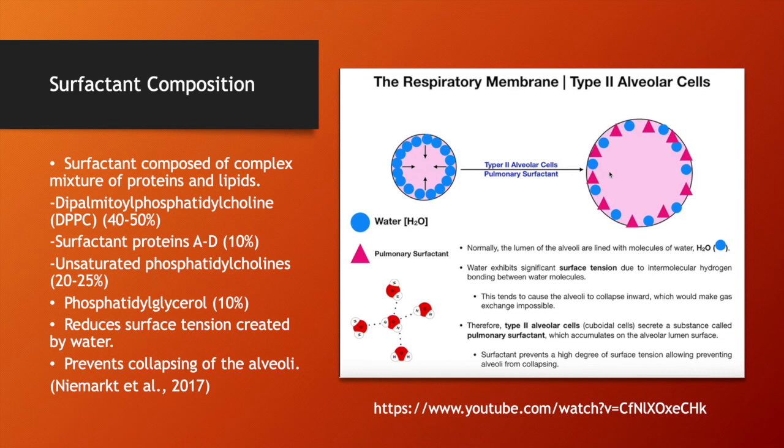Surfactant is composed of a complex mixture of proteins and lipids. 40 to 50 percent of surfactant is made of dipalmitoyl phosphatidylcholine, or DPPC for short. 10 percent is made of proteins called surfactant proteins, and there are four types: A through D. 20 to 25 percent is composed of unsaturated phosphatidylcholine, and 10 percent is made of phosphatidylglycerol.